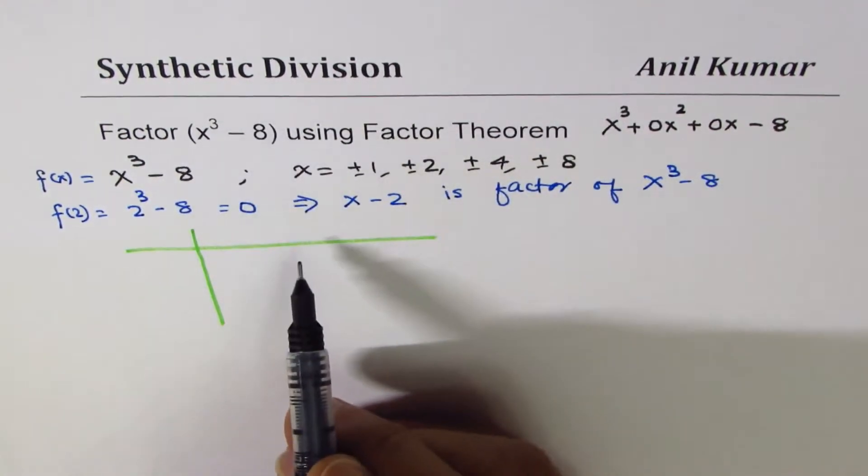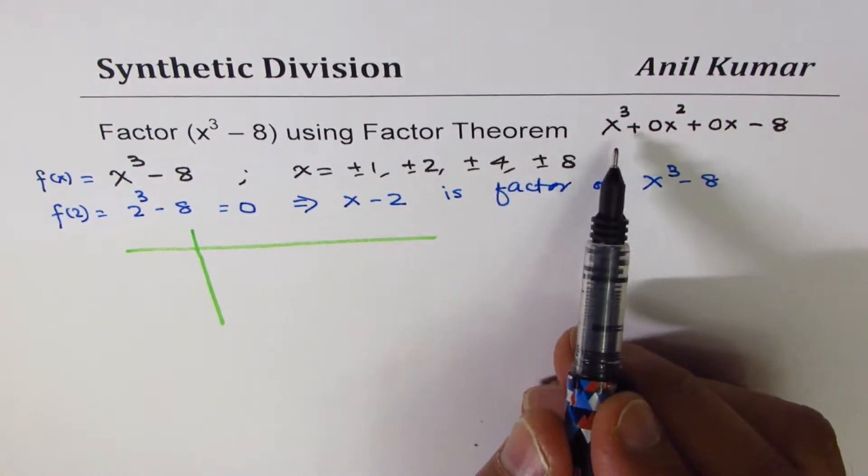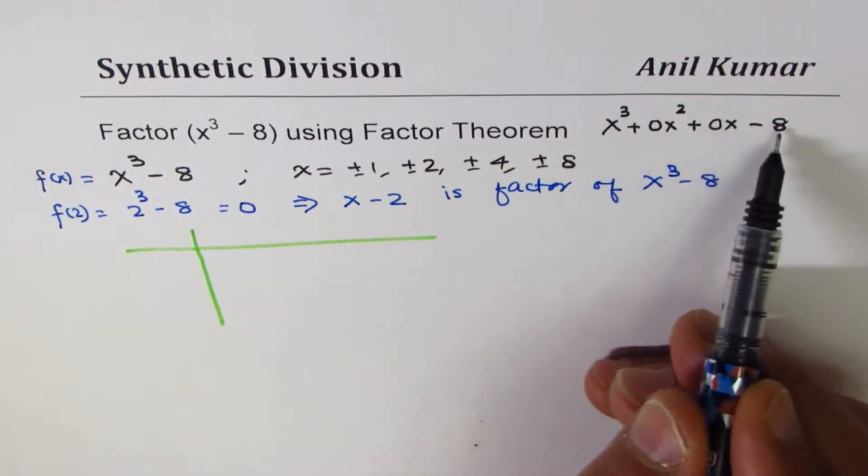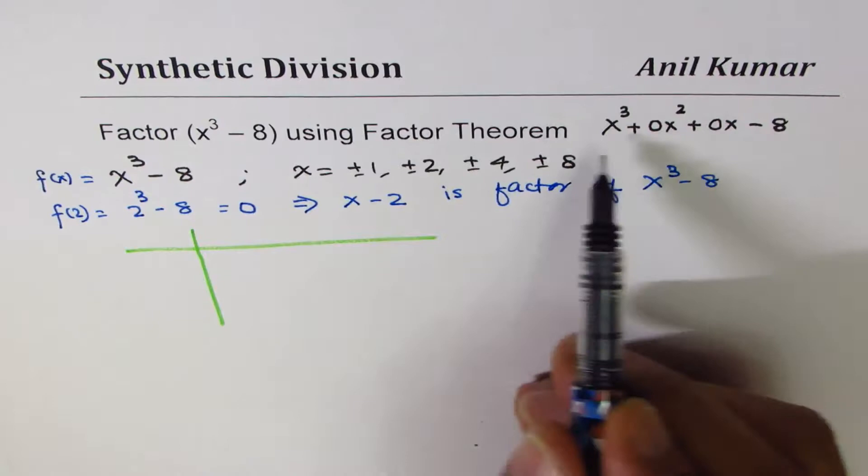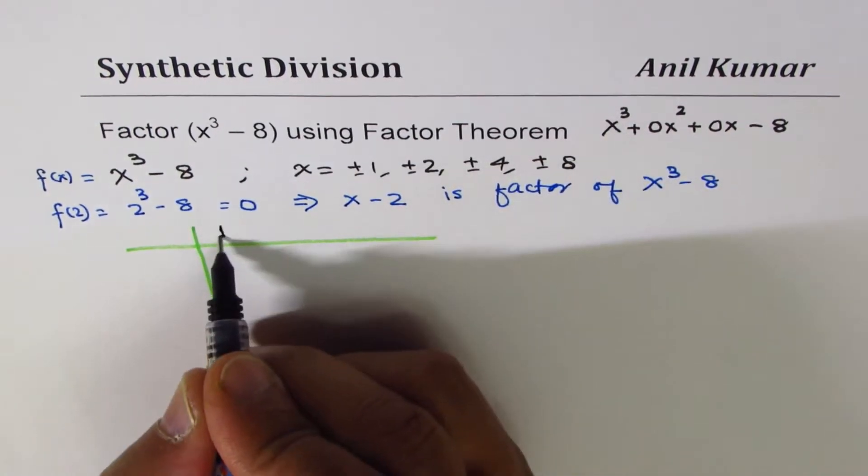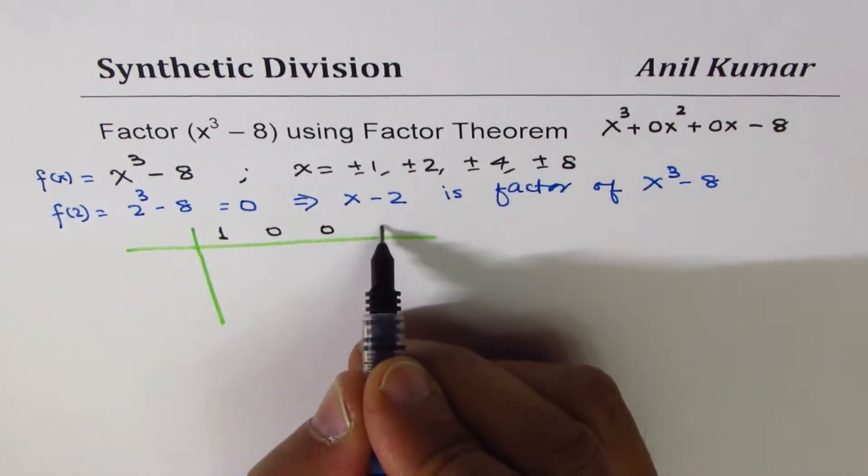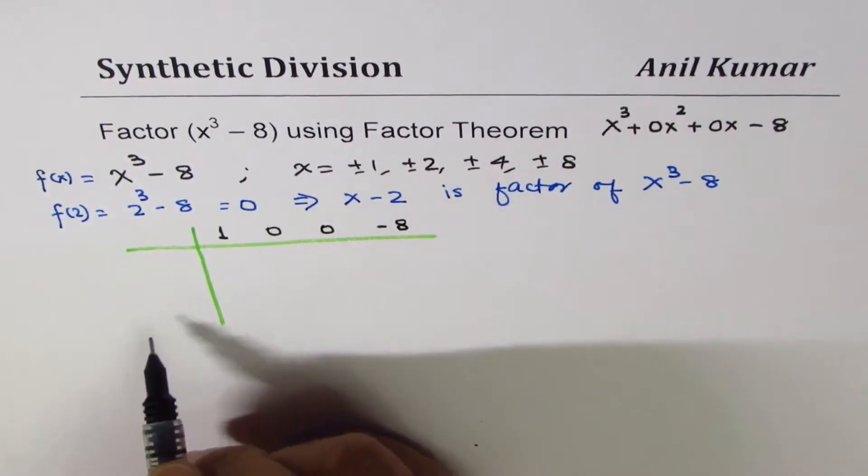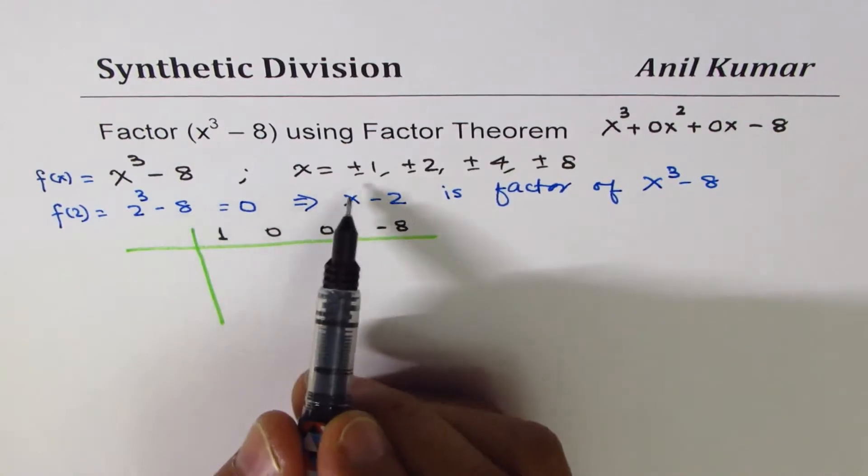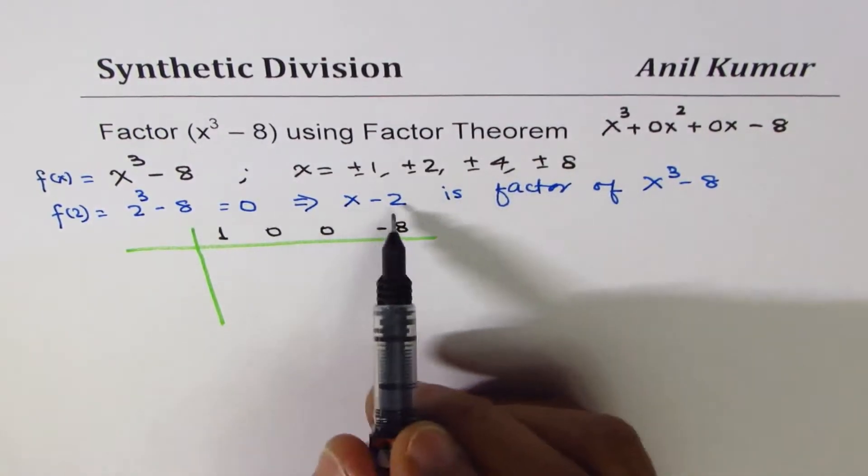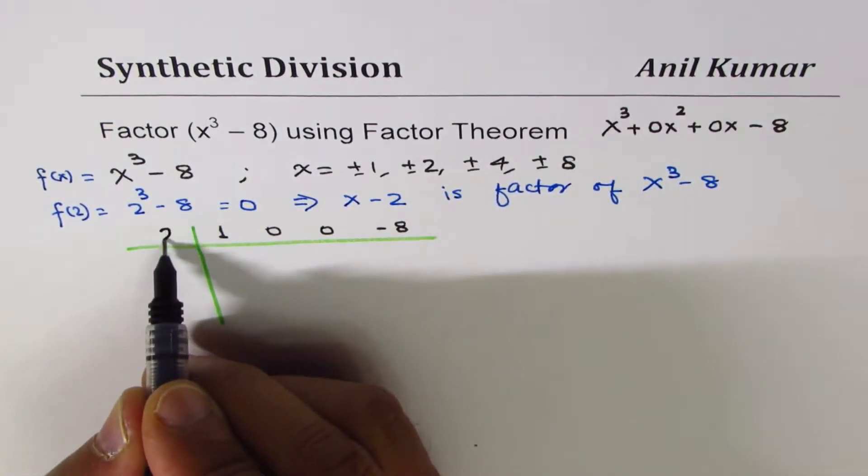Whenever we do synthetic division, we only use the coefficients, the constant terms. So 1 for x cube, 0 and 0 for x square and x, and the constant here is minus 8. Since 2, x minus 2 is a factor, we'll divide it by 2.